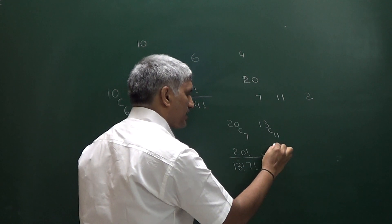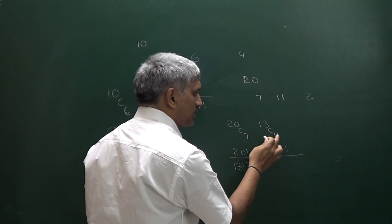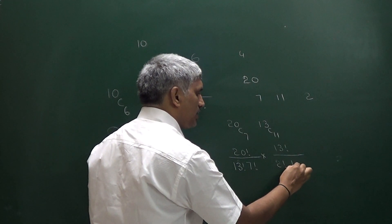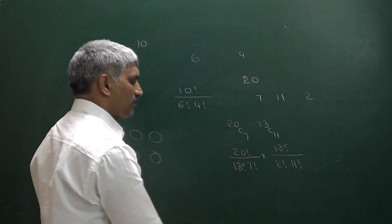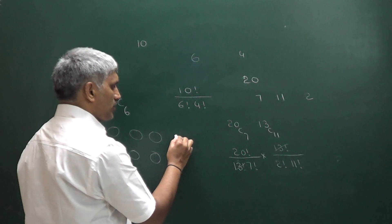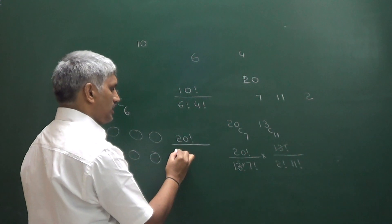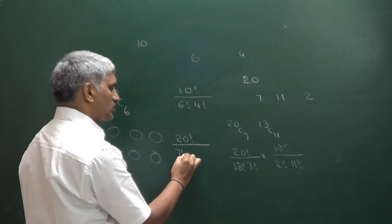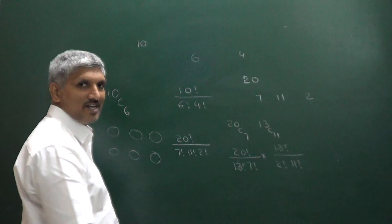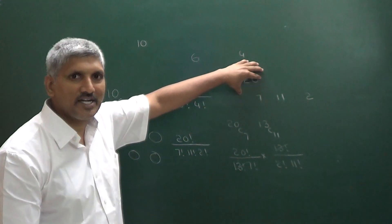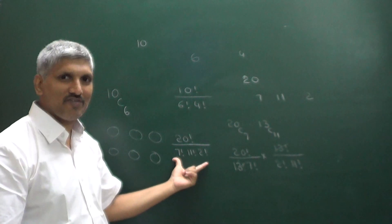13C11 can be written as 13 factorial divided by 2 factorial into 11 factorial. The 13 factorials cancel. So we get the answer as 20 factorial divided by 7 factorial into 11 factorial into 2 factorial. So these 20 items divided into 3 groups can be done in these many ways.